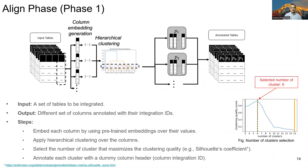Now I will briefly explain the Align phase of our algorithm. The input to the Align phase is a set of tables to be integrated, and this phase outputs different sets of columns annotated with their integration IDs. To do such annotation, we first embed each input column using its values. Then we apply hierarchical clustering over the embeddings, which gives us a dendrogram showing all possible clusters. After that, an important decision is selecting the number of clusters, which will be the number of columns in the integrated table. For this, we determine the clustering quality score for each number of clusters, as shown in the graph. We select the number of clusters that maximizes the clustering quality score — for example, the number of clusters will be 6 as it gives the best clustering quality score in this example. We measure clustering quality score using the silhouette coefficient, which gives better results than other measures based on our experiments. After we determine which columns belong together, we assign them a dummy column header called an integration ID, which serves as the column header during the integration phase.